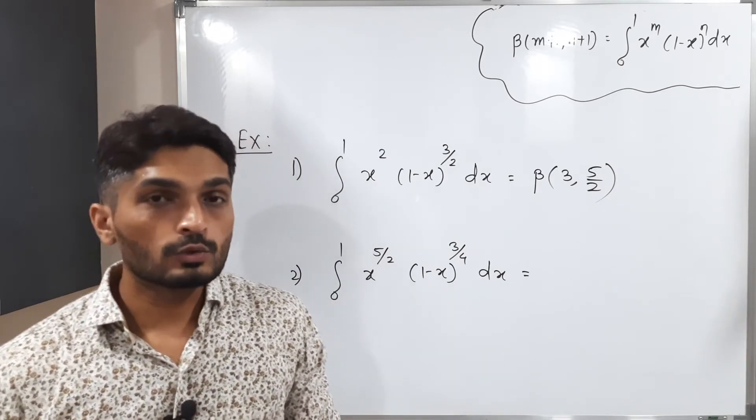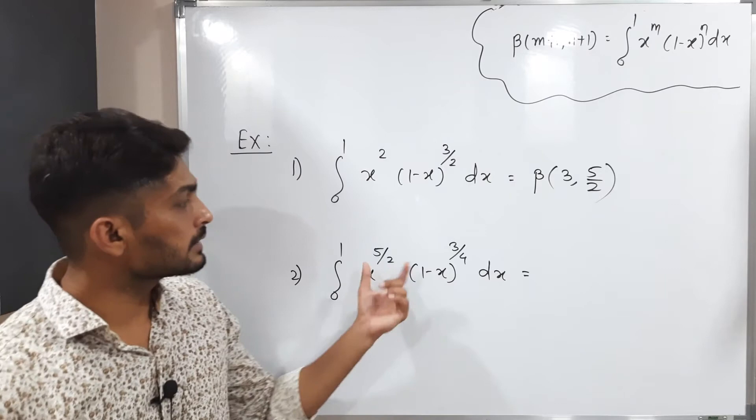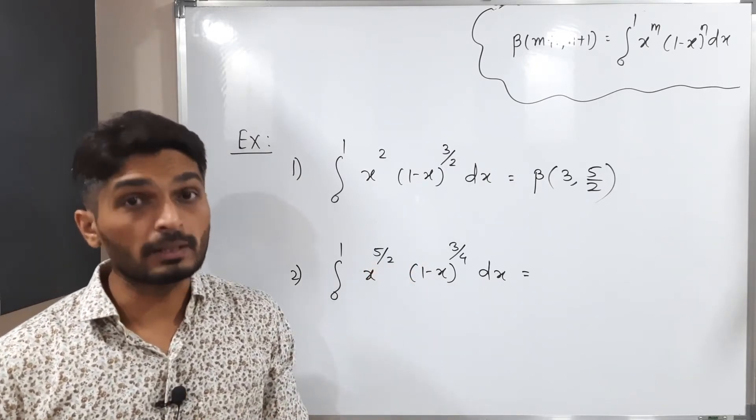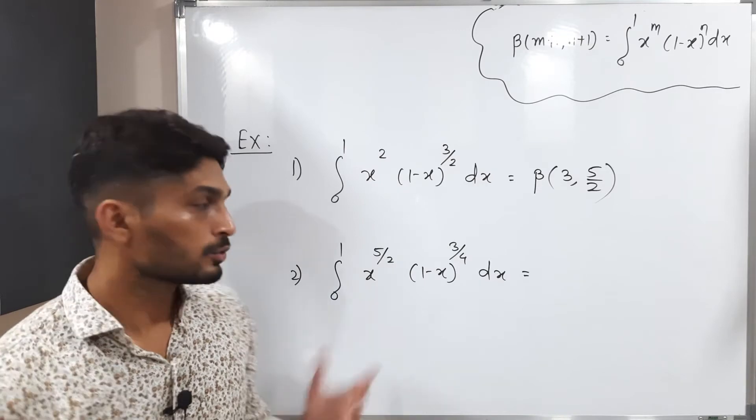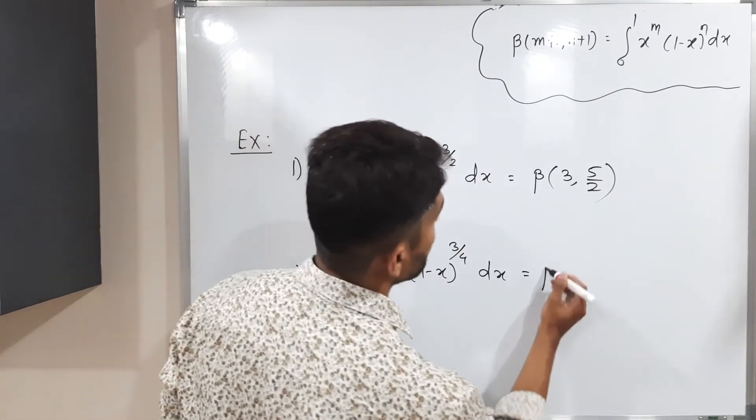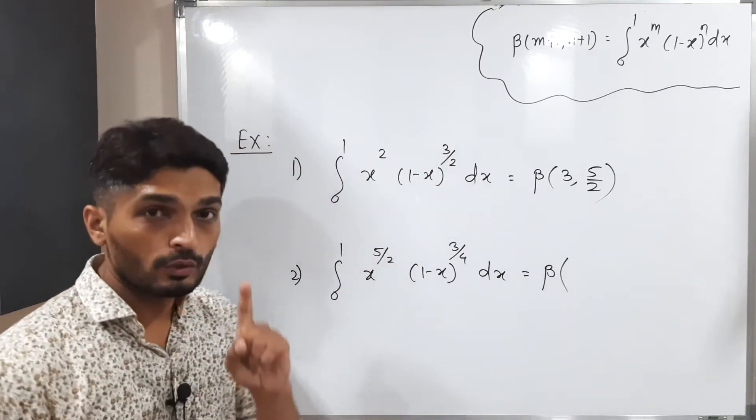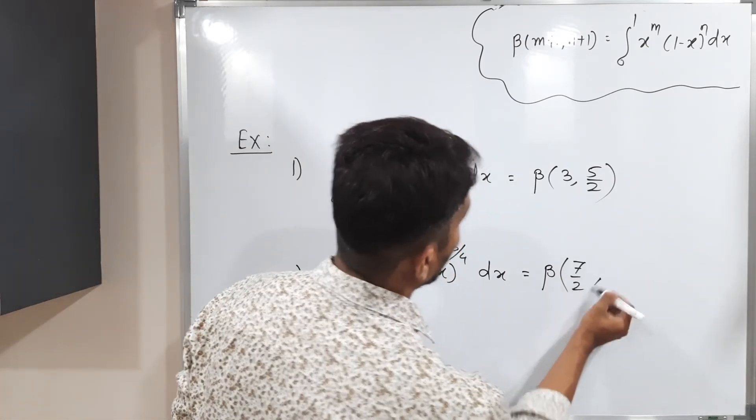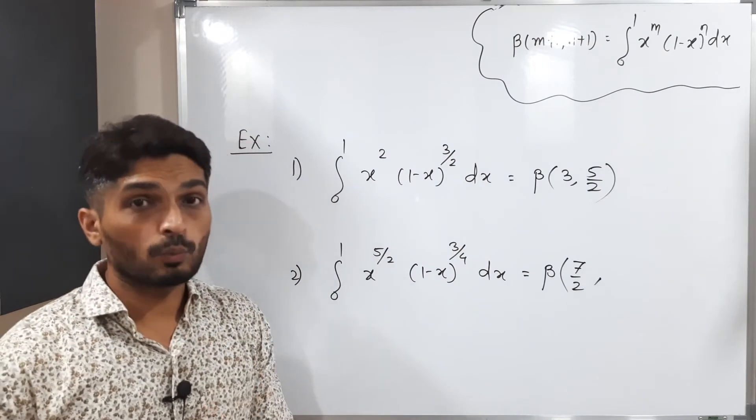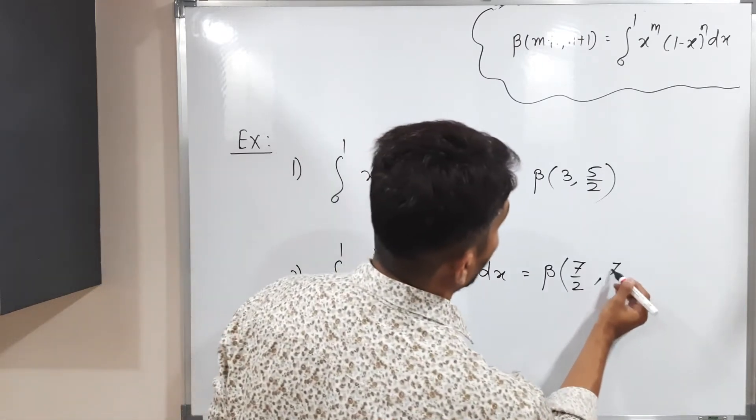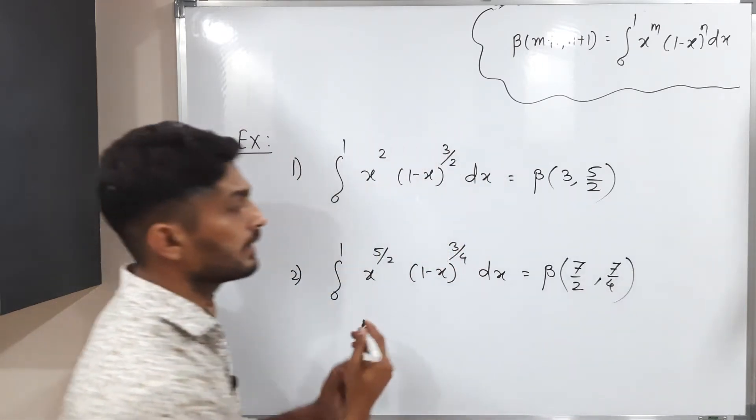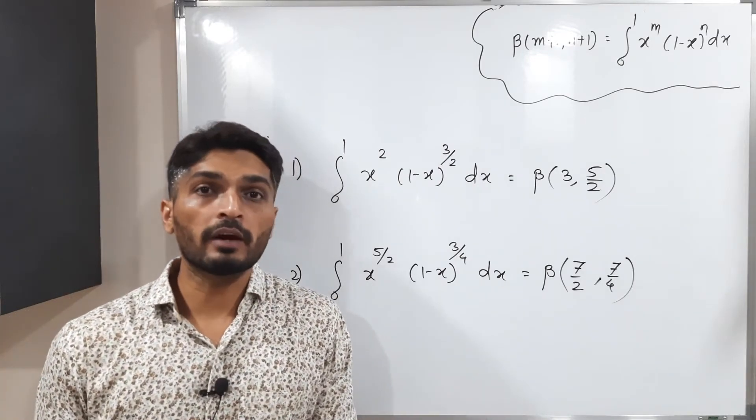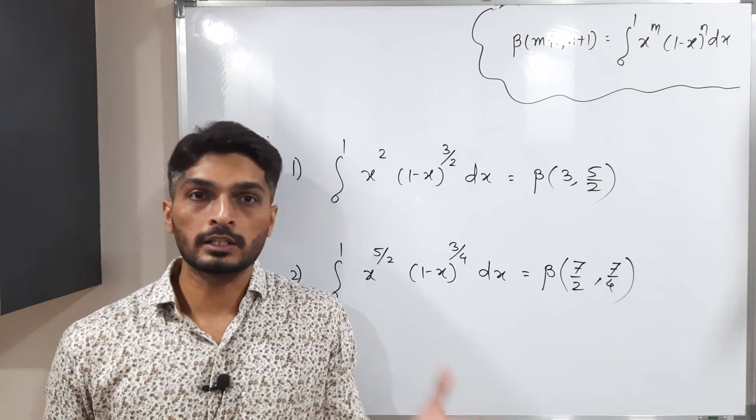The important thing is the power of variables x and 1 minus x should be positive. Let us write beta of - I am going to add 1 to 5/2, which gives 7/2, and 3/4 plus 1 equals 7/4. In this way we express this integral in the form of beta function. I hope you have understood how to express an integral in the form of beta function using the definition.